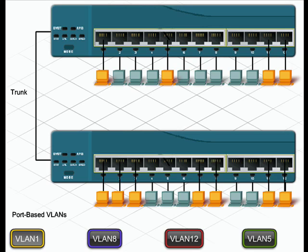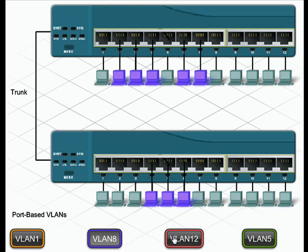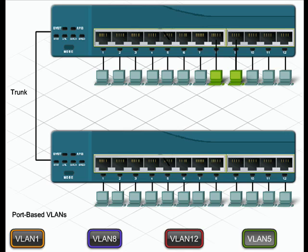Now that you know some benefits of VLAN implementation, let's look at the most popular type of VLAN configuration: static port-based VLAN assignment. Static VLAN assignment requires an administrator to manually assign each port on a switch to a specific VLAN. As you can see here, specific ports have been assigned to specific VLANs. Generally, the administrator will create the VLAN first and then assign the ports to the appropriate VLAN. The device plugged into the port automatically becomes part of that VLAN. If someone in an organization moves from an office on one floor to a different floor, a simple port configuration enables that person to continue to participate in the appropriate VLAN.